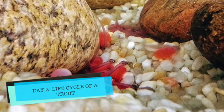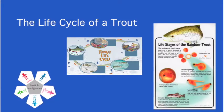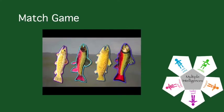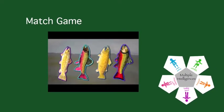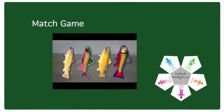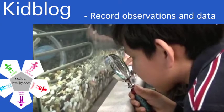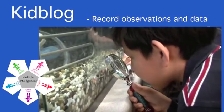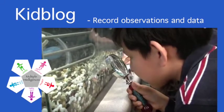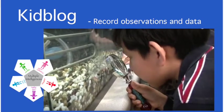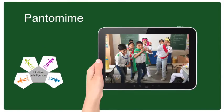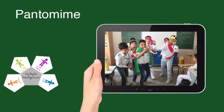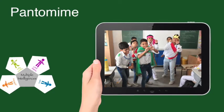On day two, we will explore the life cycle of a trout. Students will be introduced to the five stages of the life cycle by viewing a video. Following instruction, pairs will utilize iPads and Chromebooks to play an interactive life cycle match game. In small groups, students will be excused to go observe the trout eggs. At this stage, some of the eggs are hatching into alevin. Students will record data and observations into their KidBlog, and digital photos can also be taken using the classroom iPads. Day two will conclude with students working in small groups to create a short pantomime acting out each of the stages, which will be video recorded for inclusion in their KidBlog.